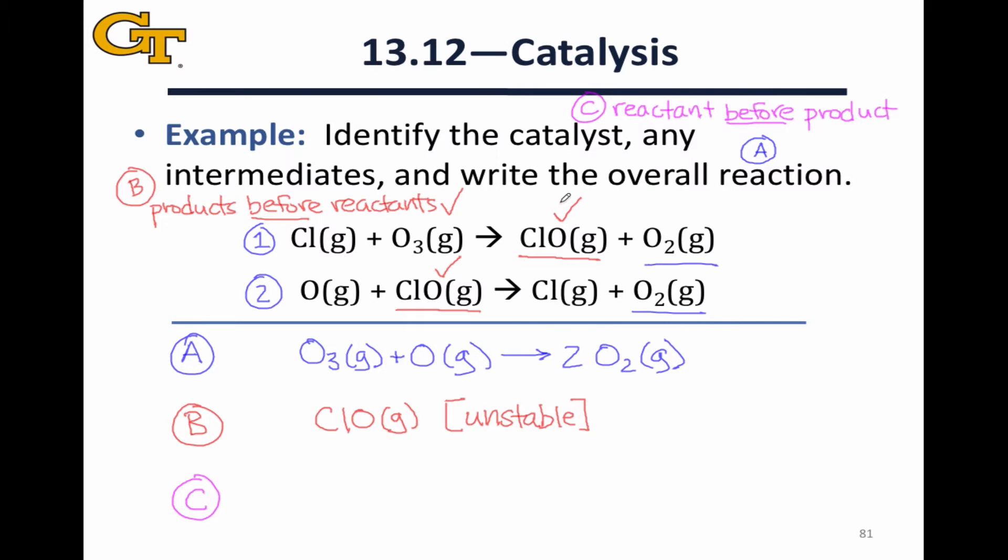So here now we're looking for something that serves as a reactant before it serves as a product. If we look on the reactant side of the mechanism, we see that we've identified CLO as an intermediate, so that's out as a catalyst. O3 we've identified as one of the reactants, and O we've identified as well as one of the overall reactants. So the only species left to look at, then, is the chlorine atom.